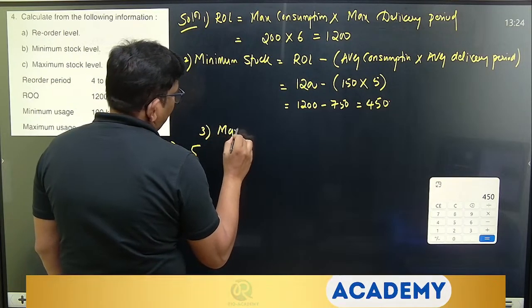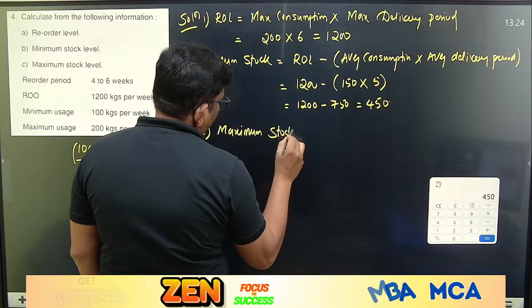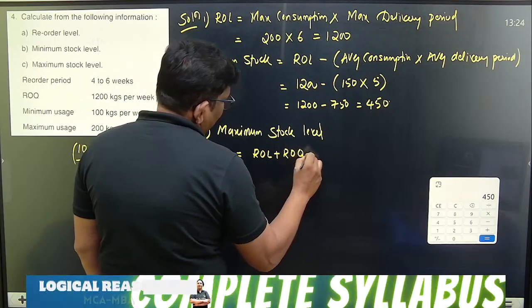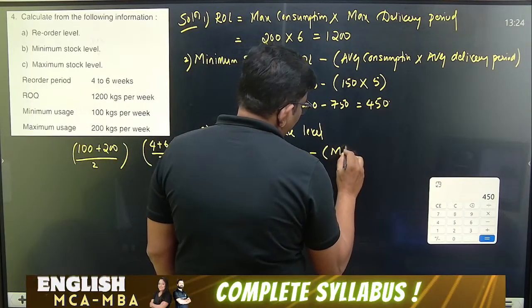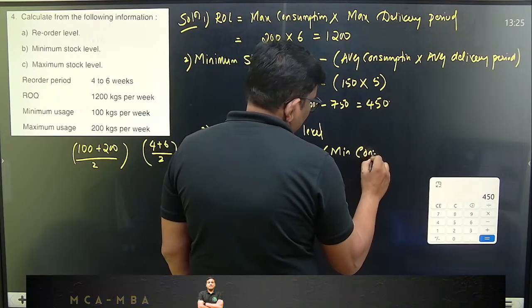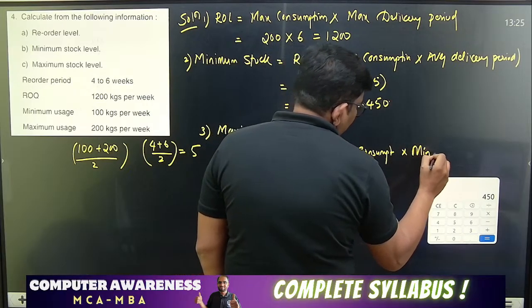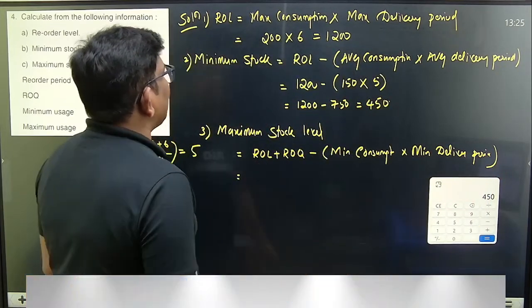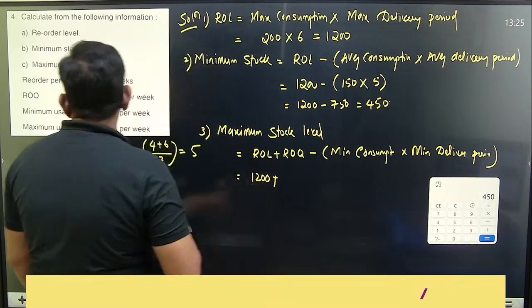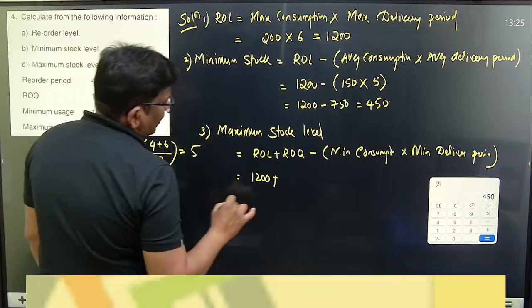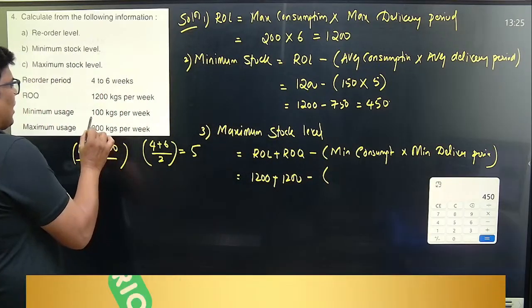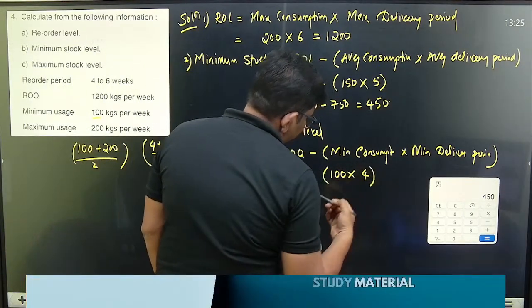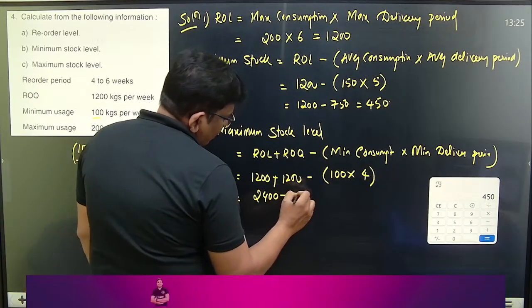Maximum stock level equals reorder level plus reorder quantity minus minimum consumption into minimum delivery period. Reorder level is 1,200 plus reorder quantity is 1,200. Minimum consumption is 100, multiply by minimum delivery period of 4. So 2,400 minus 400 equals 2,000.